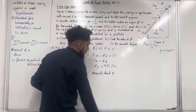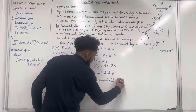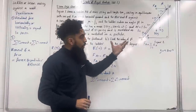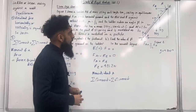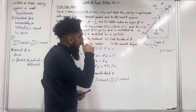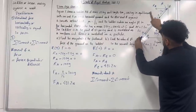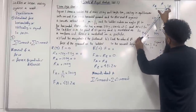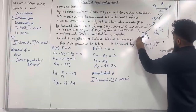Taking moments about A: the sum of clockwise moments equals the sum of anticlockwise moments. Taking moments about A eliminates F_A and R_A. The only forces we consider are 25g, 75g (both clockwise), and R_B (anticlockwise). If you put your pen at point A, the 25g and 75g forces rotate the body clockwise, whereas the R_B force rotates it anticlockwise.